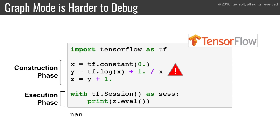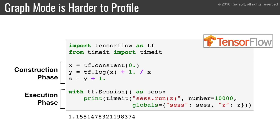Here's another more common example. X is used to compute Y, which is used to compute Z. If you evaluate Z and you get a bad result, such as a NaN value or an exception, TensorFlow won't tell you where the problem came from. In this case it's easy to see that the problem comes from Y, but when there are many operations, it can be tricky to debug. TensorFlow actually has a dedicated debugger to help you, but it's not that easy to use. For the same reason, graph mode is also hard to profile.